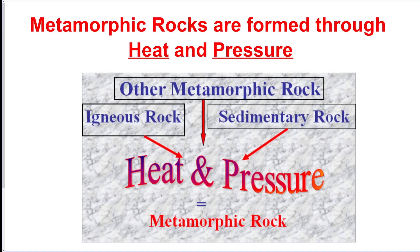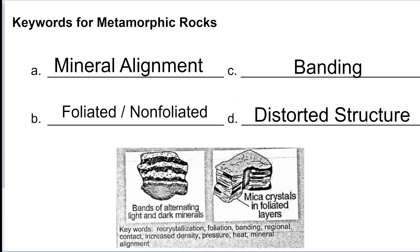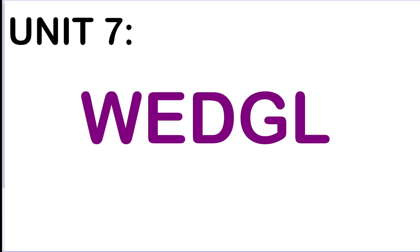Metamorphic rocks form from heat and/or pressure. Contact metamorphism is when rock is close enough to a magma chamber to be changed but not close enough to melt into igneous rock — it just feels the heat and metamorphosizes. The four characteristics of metamorphic rocks: mineral alignment, foliated or non-foliated texture, banding, and distorted structure.